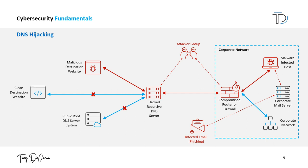Through malware, an attacker can use malware to modify the DNS settings on a user's computer, redirecting traffic to a malicious website. Through phishing, an attacker can trick users into visiting a malicious website and then use malware or other techniques to alter the DNS settings on their computer or router. And through hacking DNS servers, an attacker can gain access to a DNS server and alter the records stored on it, redirecting traffic from a legitimate website to a malicious website.